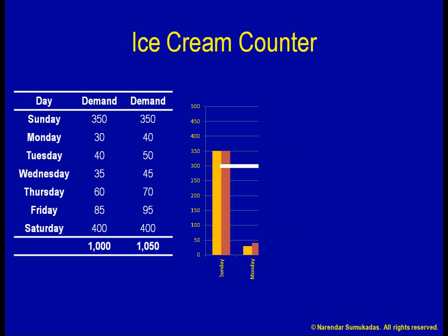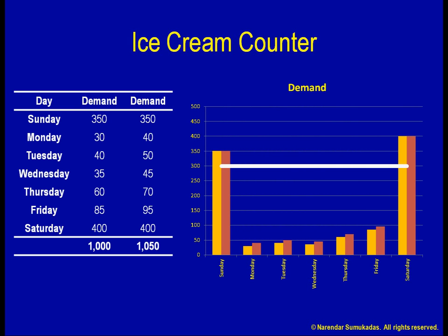Here is the daily demand pattern for the weeks when demand equals 1,000 and 1,050. In both of these situations, the maximum demand seems to be happening on Saturdays and Sundays. Comparing the daily demand versus the daily capacity of 300 customers per day, I can see that on both these days, my demand exceeds capacity. So, on Sundays, I am turning away 50 customers, and on Saturdays, I am turning away 100 customers. Therefore, each week, I am turning away 150 customers.